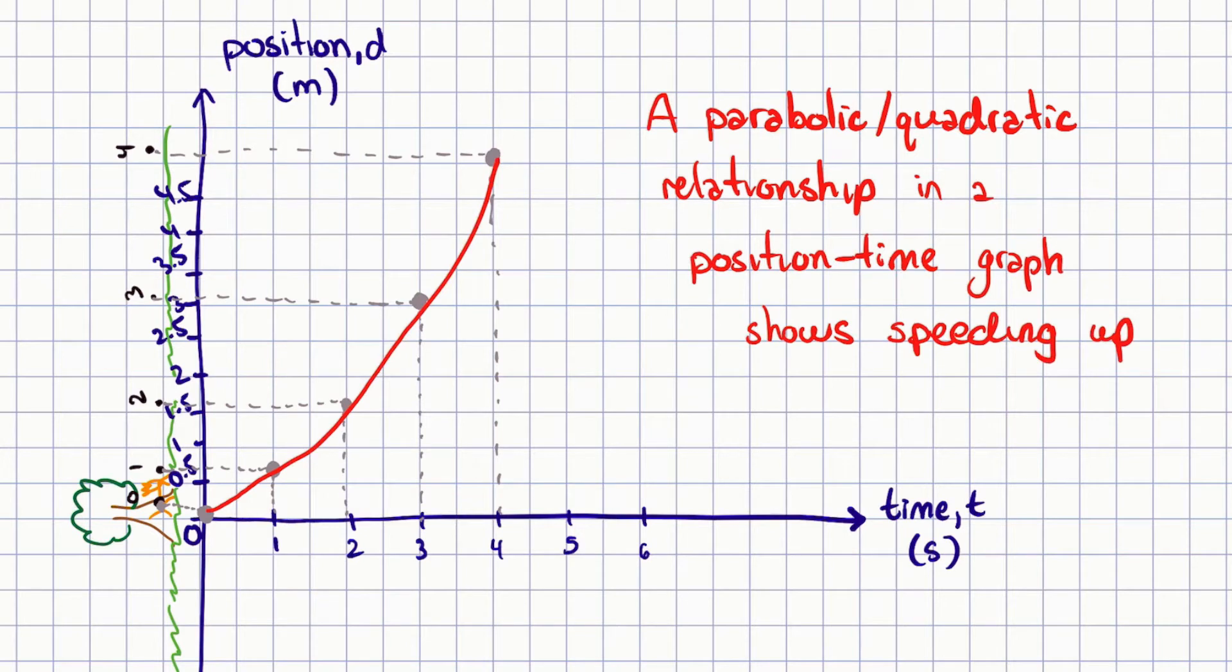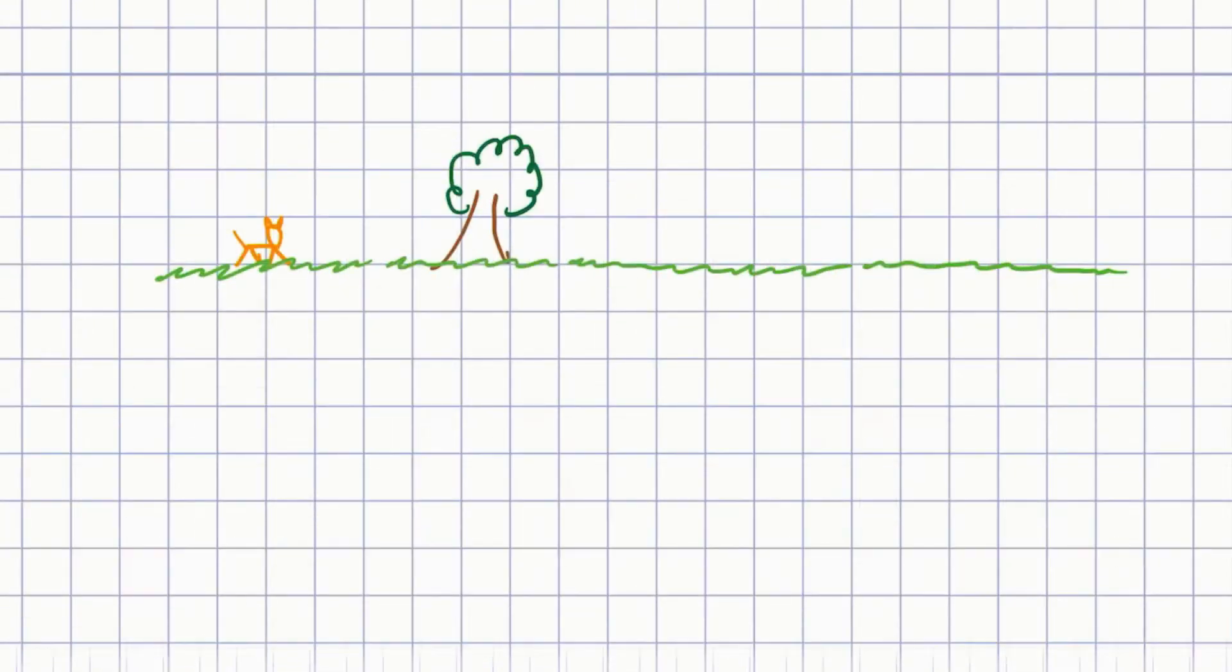In this case, when you come across a parabolic or quadratic relationship in a position-time graph, it is showing speeding up type of motion. This is quite straightforward. In this same video I'm going to now show you what slowing down will look like. To make things a bit more interesting, we're going to set the cheetah to be to the left of the tree.